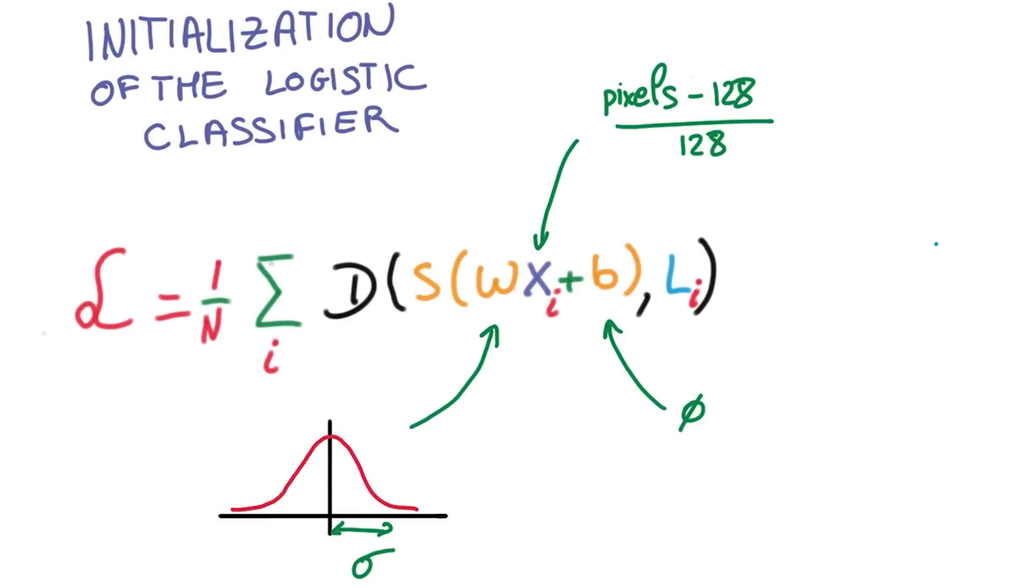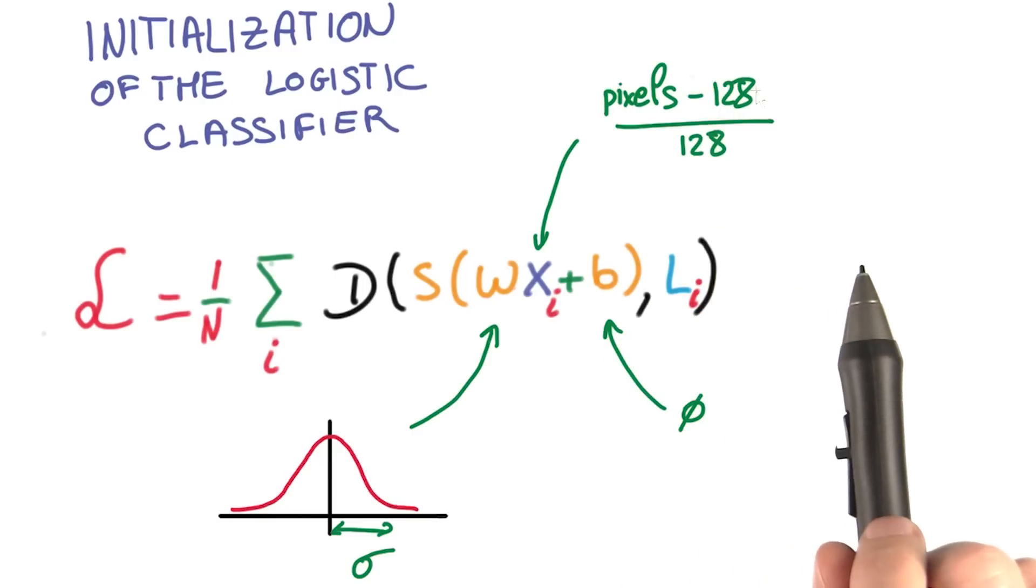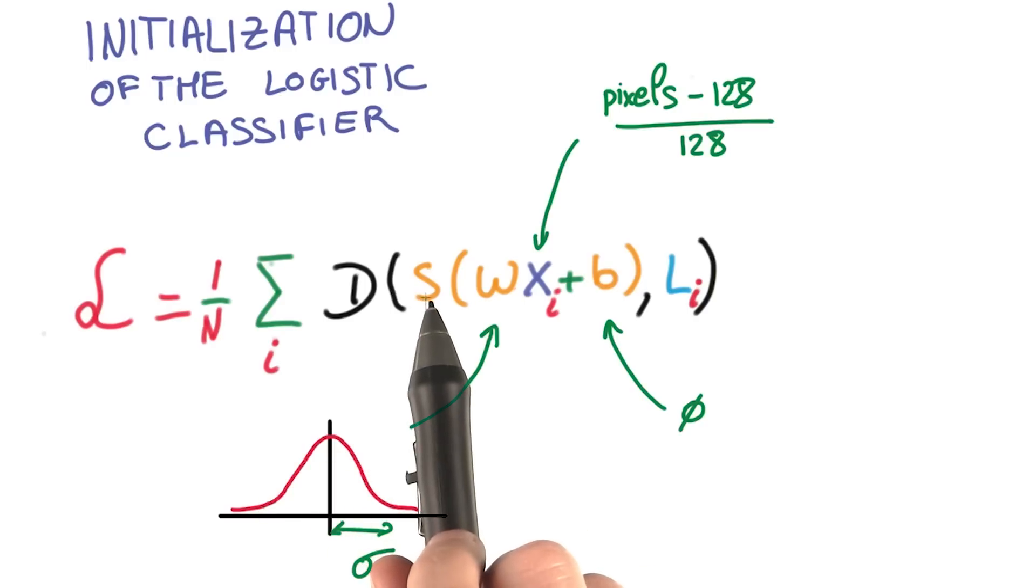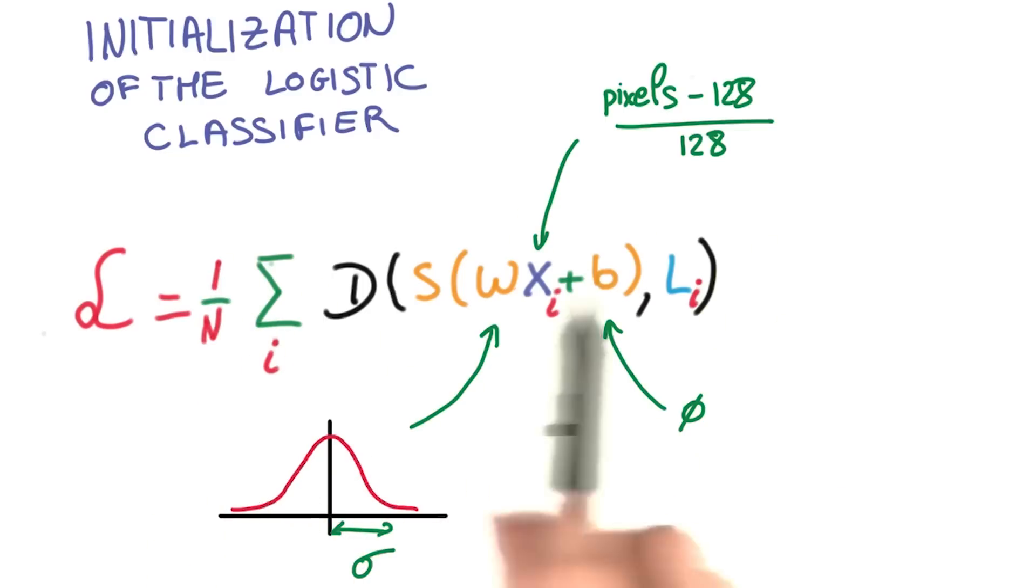Okay, so now we actually have everything we need to train this classifier. We've got our training data, which is normalized to have 0 mean and unit variance. We multiply it by a large matrix, which is initialized with random weights. We apply the softmax, then the cross entropy loss. And we calculate the average of this loss over the entire training data.